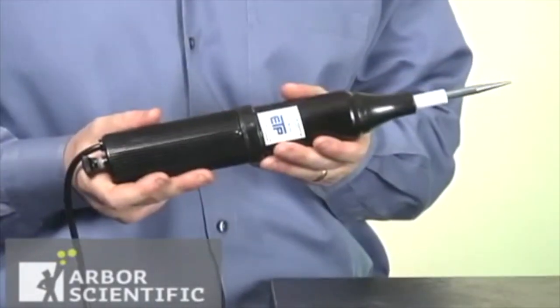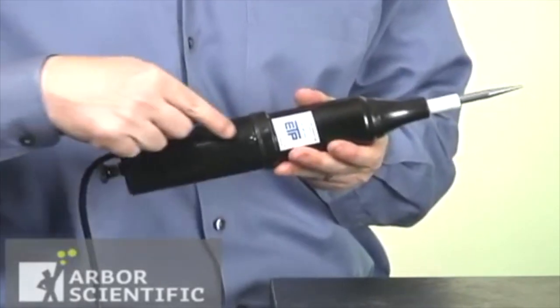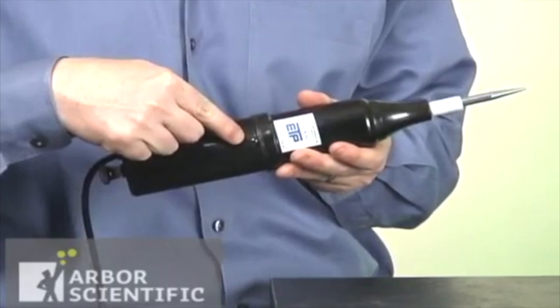This handheld Tesla coil is smaller and easier to handle than larger bulkier models. It even has a momentary on-off switch for improved safety.